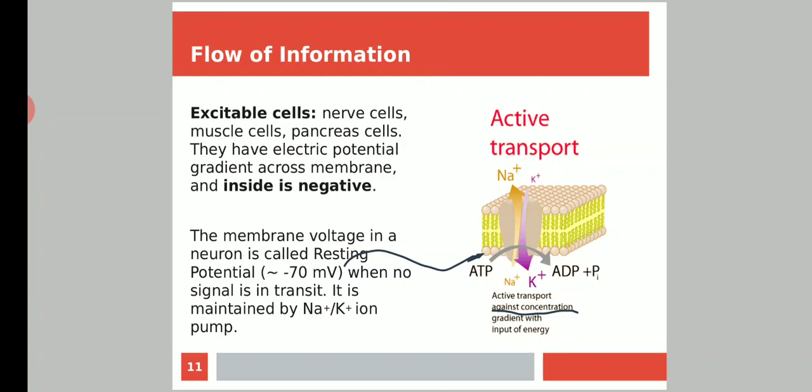The inside of the cell is always at a negative potential. The membrane voltage in a neuron is called resting potential. The value of resting potential is minus 70 millivolts. Resting potential is the electric potential across the membrane when no signal is in transit. It is maintained by the sodium-potassium ion pump.